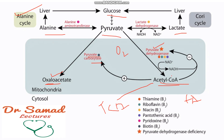If there is no oxygen available, pyruvate can be converted into lactate with the help of an enzyme lactate dehydrogenase. This lactate will be taken back to the liver, where it will be converted into glucose again through gluconeogenesis.